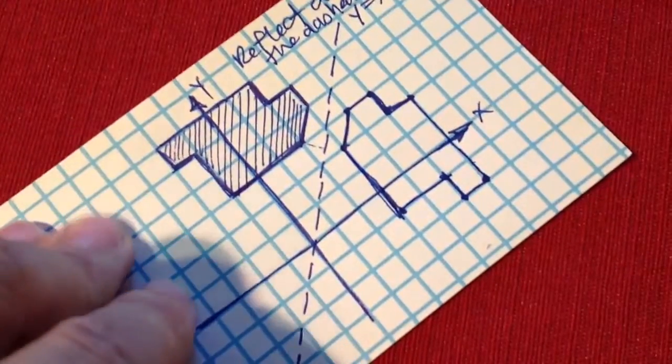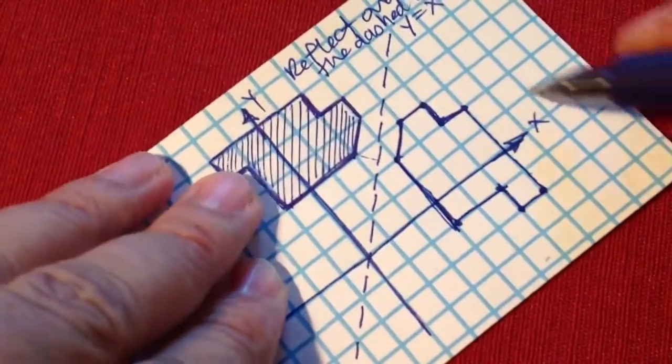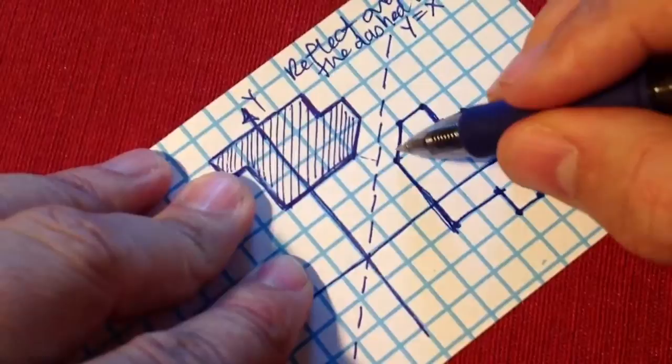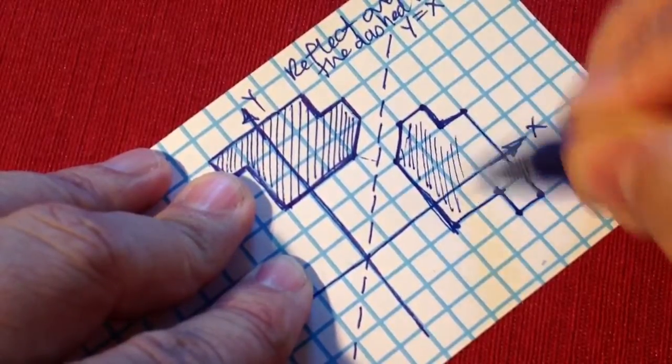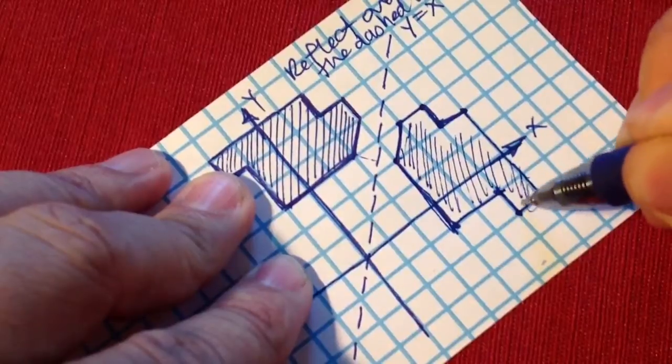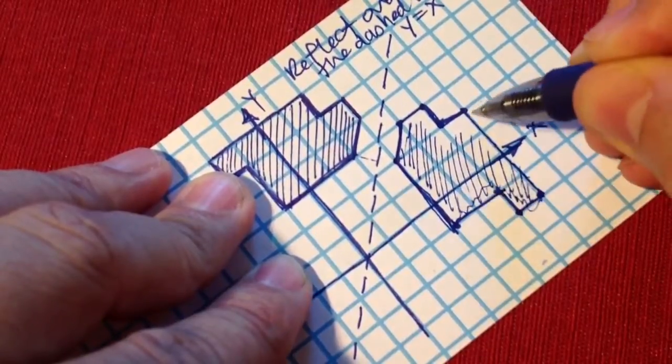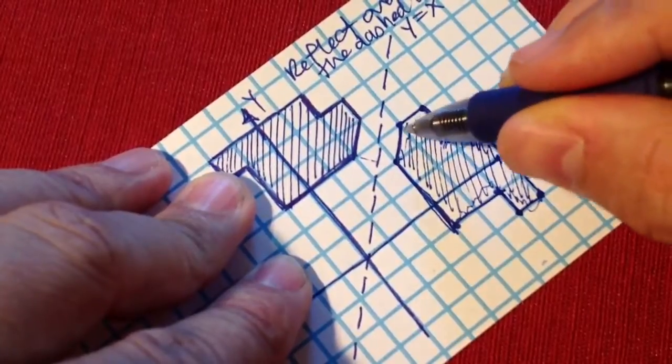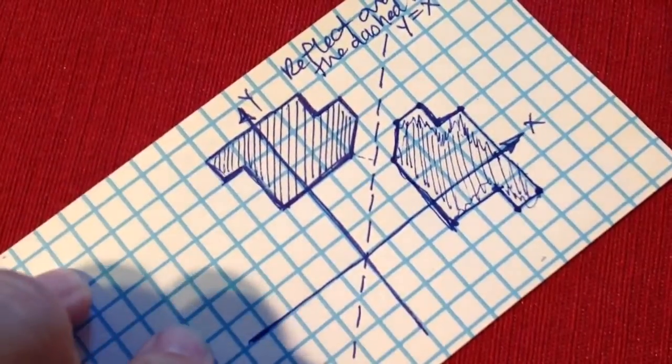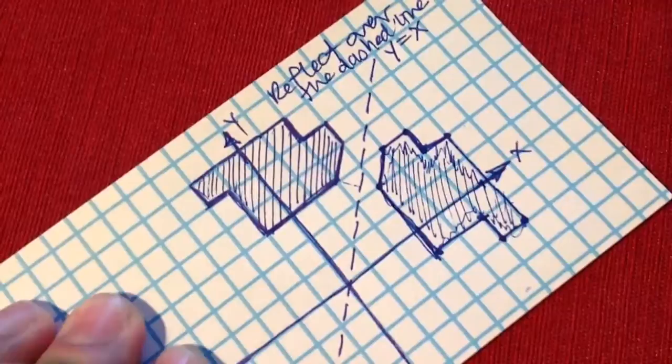Okay, and there it is, the reflected shape. We could of course shade it if we want. Reflection over y equals x.